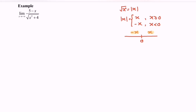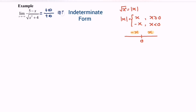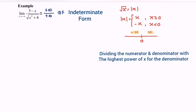Now let's discuss the situation on the left hand side: the limit when x approaches negative infinity for the function (5 minus x) over the square root of (x squared plus 4). If we substitute the value, we will have positive infinity for the numerator and positive infinity for the denominator as well. For this case it can be denoted as an indeterminate form. The strategy to solve this kind of problem is dividing the numerator and the denominator by the highest power of x of the denominator.